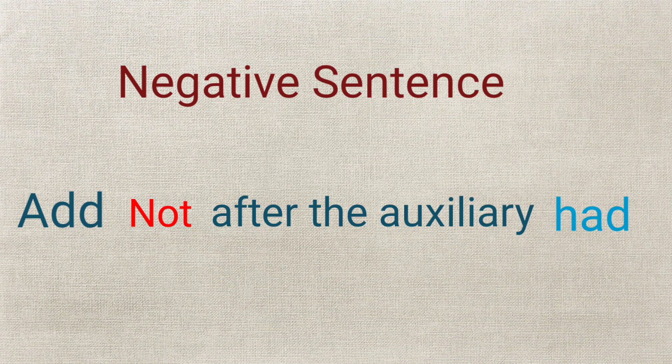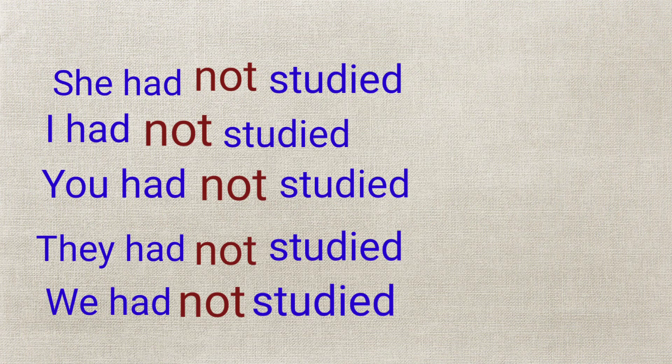Now, how to form negative sentences — very simple. Just add 'not' after the auxiliary or helping verb 'had'. For example: she had not studied. I had not studied. You had not studied. They had not studied. We had not studied.